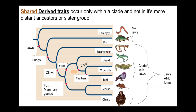We can also define a clade which has two traits: jaws and lungs. Fish process their oxygen through gills, so we can mark lungs on the tree right here. Fish are on this branch — they lack lungs. All of the organisms downstream of this trait — salamanders, lizards, and so forth — are defined by these two shared traits: lungs and jaws.